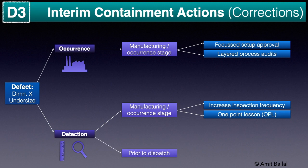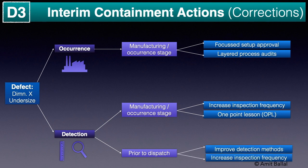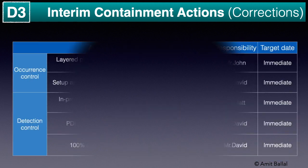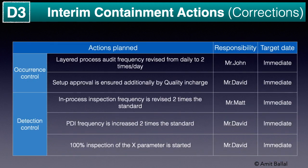Prior to dispatch, actions such as improving the detection method and increase in inspection frequency can be taken for detection control to prevent passing to the customer end. This is a table describing how containment action is to be documented — you can pause and have a look at the table.